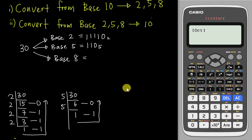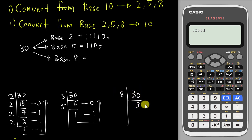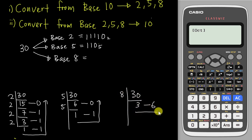If I want to convert 30 into base 8, I divide 30 by 8: 3×8=24, so remainder is 6. Then 3 cannot divide by 8 again, so reading bottom to top gives 36 base 8.